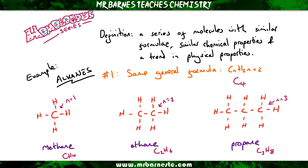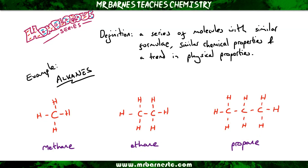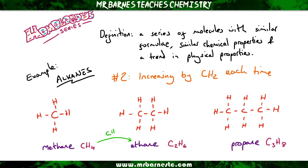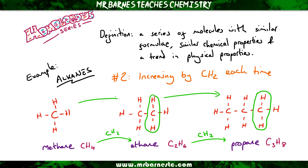That pattern continues for all of the alkanes, so C4 would be H10, and so on. The second thing to note for a homologous series is they increase by a CH2 every single time. So if you take CH4 and add CH2 onto it, you get C2H6. The same applies between ethane and propane to get C3H8. Every time you go up one carbon, you end up with an extra CH2 overall.